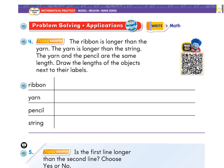When you're ready, move on to page 522. There's a fun math on the spot video that goes along with this — if you have a QR code reader you can watch it first. It says: the ribbon is longer than the yarn, the yarn is longer than the string, the yarn and the pencil are the same length. Draw the lengths of the objects next to their labels — ribbon, yarn, pencil, and string — starting at the same starting line.